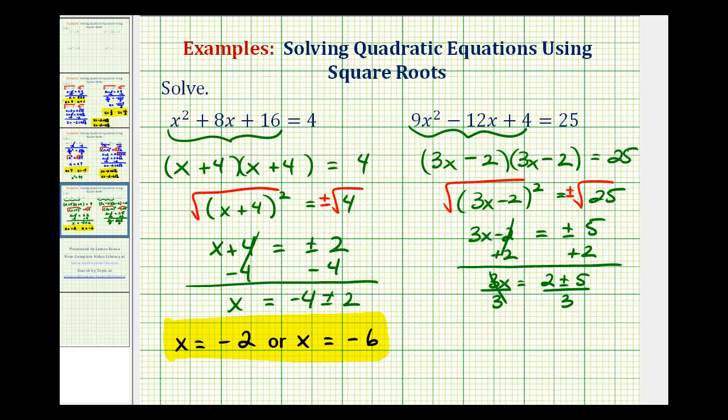So again, let's go ahead and list our two solutions. We have x equals 2 plus 5, which is 7 divided by 3, 7 thirds. Or x is equal to 2 minus 5, which is negative 3, divided by 3, which would simplify to negative 1.